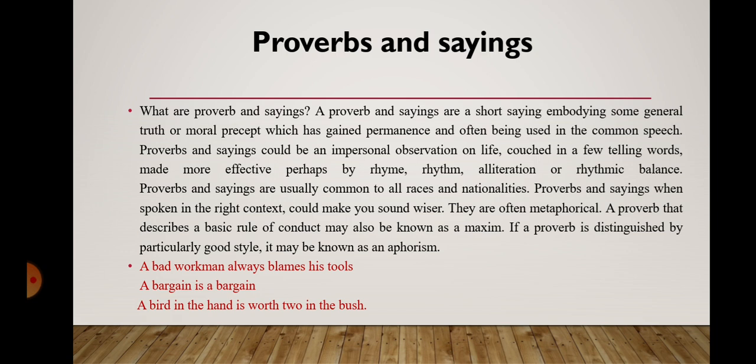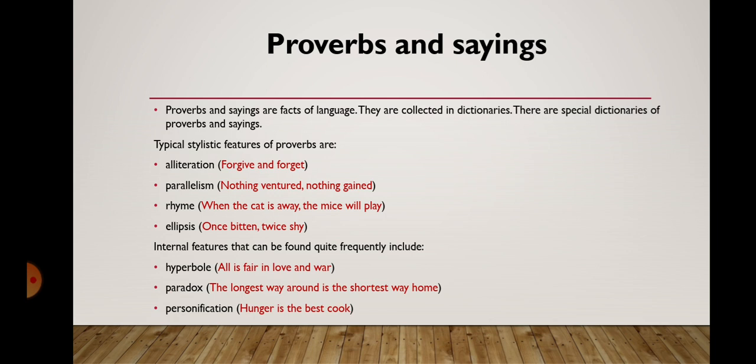Examples of proverbs include: 'A bad workman always blames his tools,' 'A bargain is a bargain,' 'A bird in the hand is worth two in the bush.' Proverbs and sayings are facts of language, collected in special dictionaries. Their typical stylistic features include: alliteration — for example, 'forgive and forget'; parallelism — 'nothing ventured, nothing gained'; rhyme — 'when the cat is away, the mice will play'; and ellipsis — 'once bitten, twice shy.'